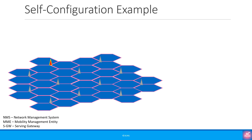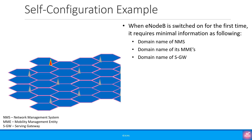Now let's say a new base station or eNodeB is switched on for the first time. It will have basic information stored on the configuration file with which it was shipped. For example, the eNodeB will need some IP addresses, so it will know how to connect to the DHCP server and get an IP address. The DNS server will allow it to discover other network nodes such as the NMS or network management system, MME or mobility management entity, and serving gateway or SGW. When the eNodeB is switched on for the first time, it requires minimal information: the domain name of the NMS, domain name of its MMEs, and domain name of serving gateways.